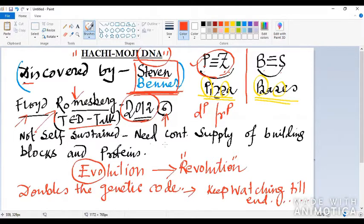But this DNA is not self-sustained and needs continuous supply of building blocks and proteins. Another problem of having Hachimoji DNA, other than having huge advantages, is it doubles the genetic code. Keep watching till the end, we will discuss all the mystery and magic of this particular molecule that will revolutionize the biological system.